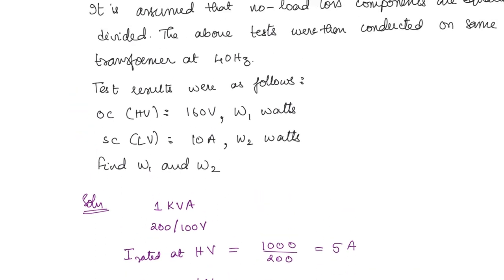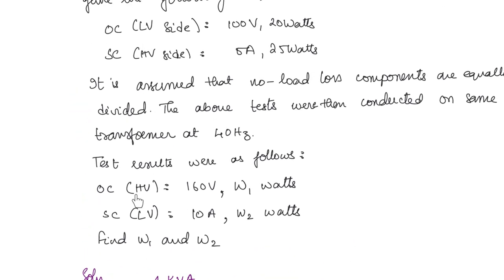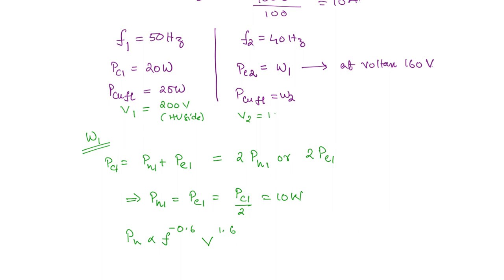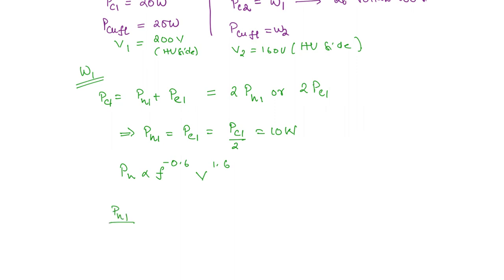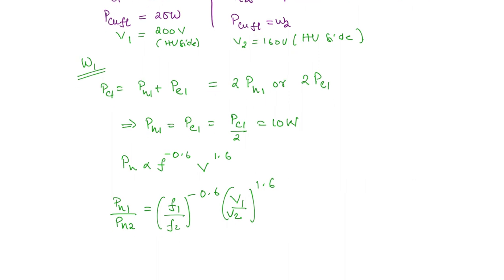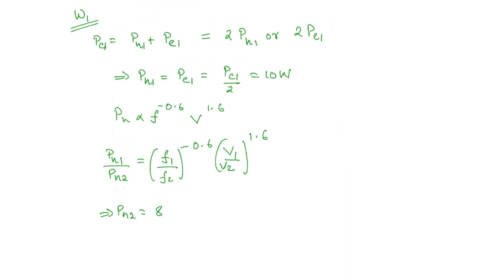In the first test the OC test was done on the LV side, and in the second it is done on the HV side. Referring both to the HV side: V1 = 200 V and V2 = 160 V. Then P_H1 / P_H2 = (F1/F2)^(−0.6) × (V1/V2)^1.6. With P_H1 = 10 W, F1 = 50, F2 = 40, V1 = 200, V2 = 160, we get P_H2 = 8 watts.